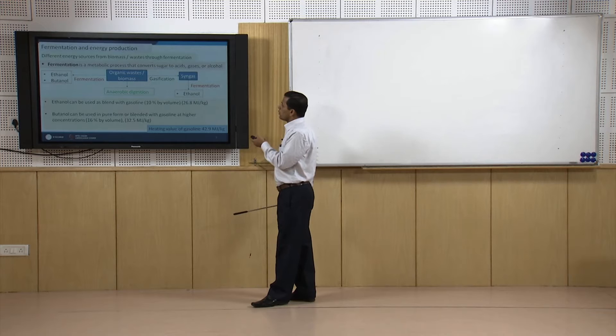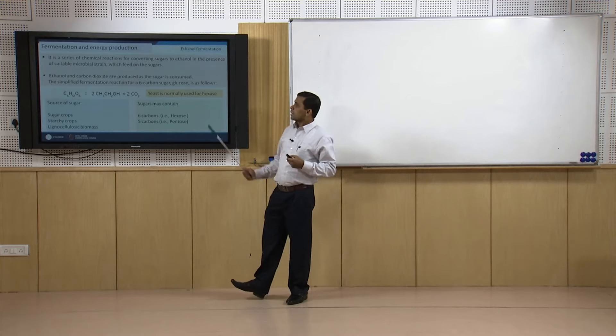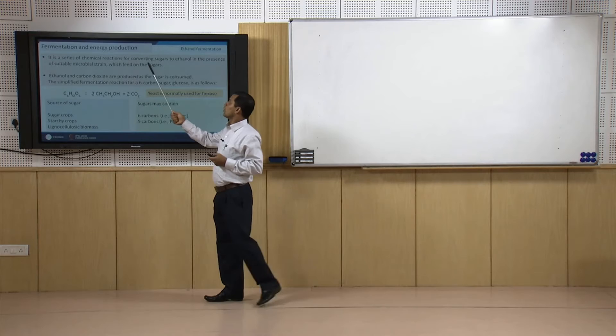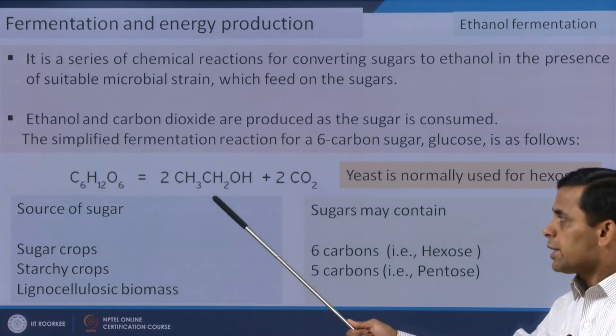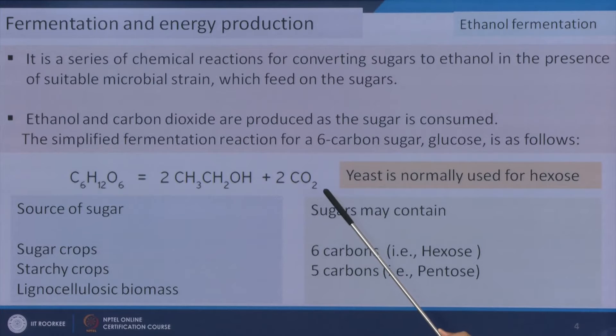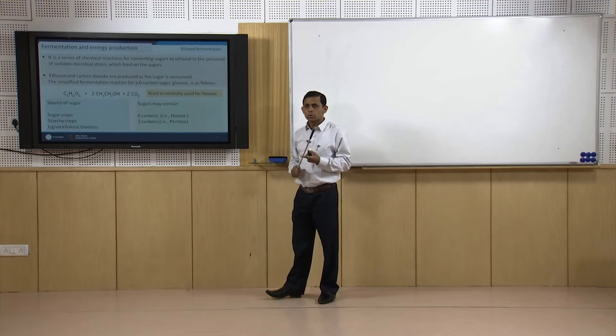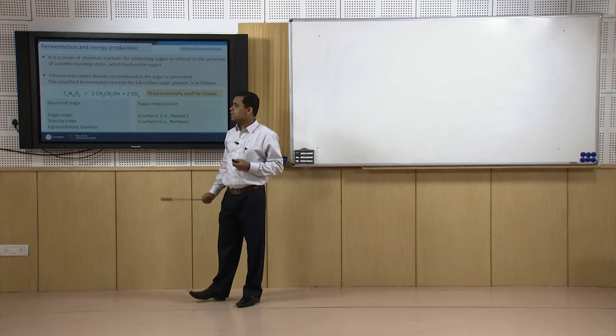Now we will see ethanol fermentation. What is ethanol fermentation? It is a series of biological or chemical reactions for converting sugars to ethanol in the presence of suitable microorganisms. The type of reaction that takes place is: sugar is converted to ethanol and carbon dioxide. Yeast is normally used for hexose sugars. There are two types of sugars that may be used — pentose and hexose. When hexose is used, yeast is used, and this reaction represents the ethanol fermentation reaction.